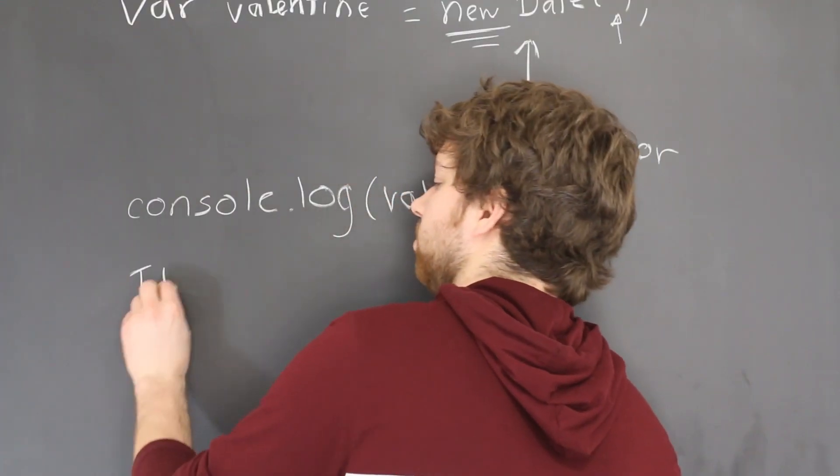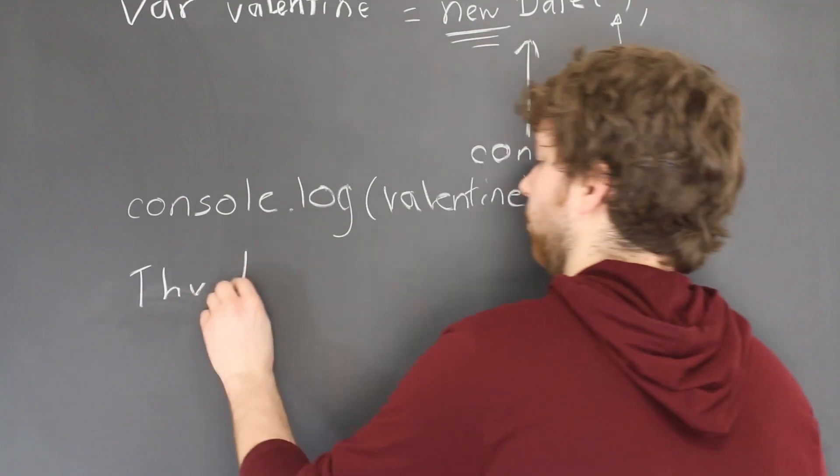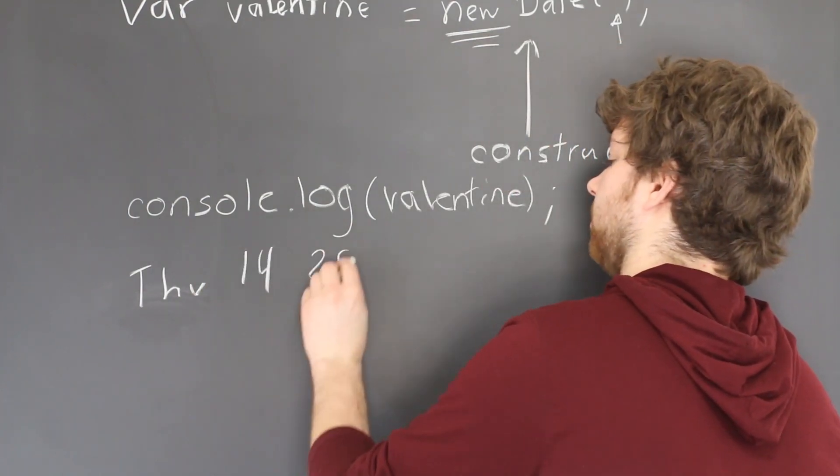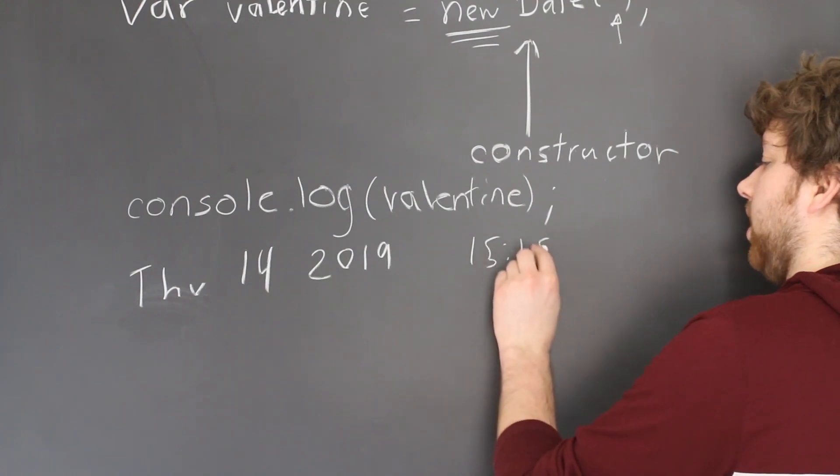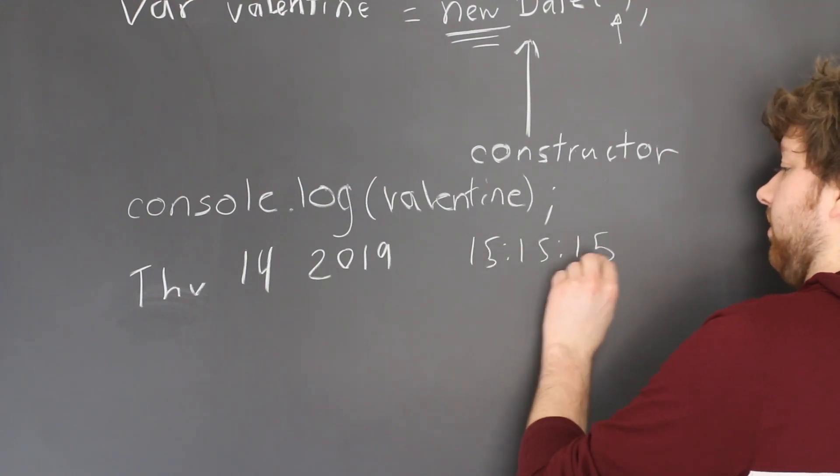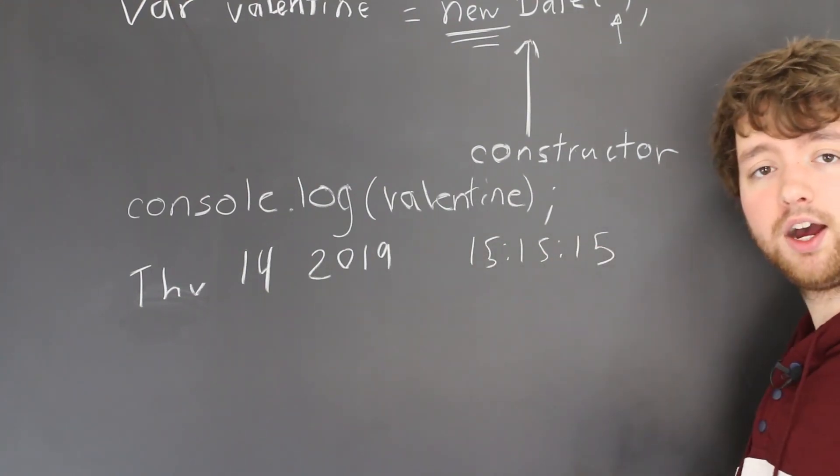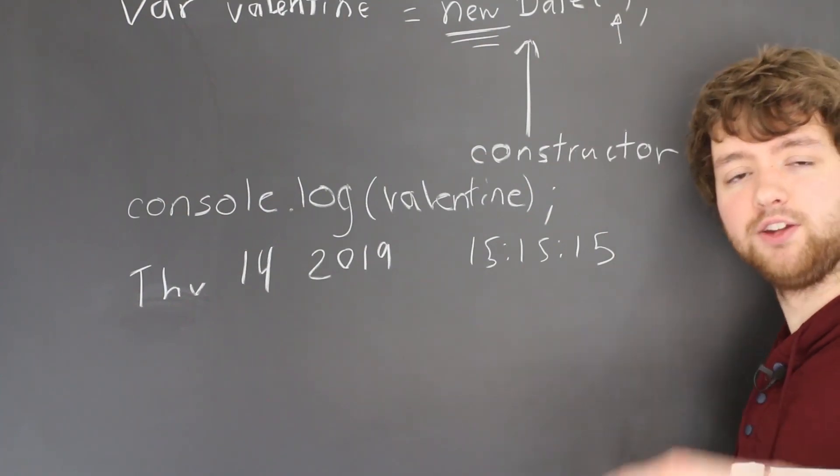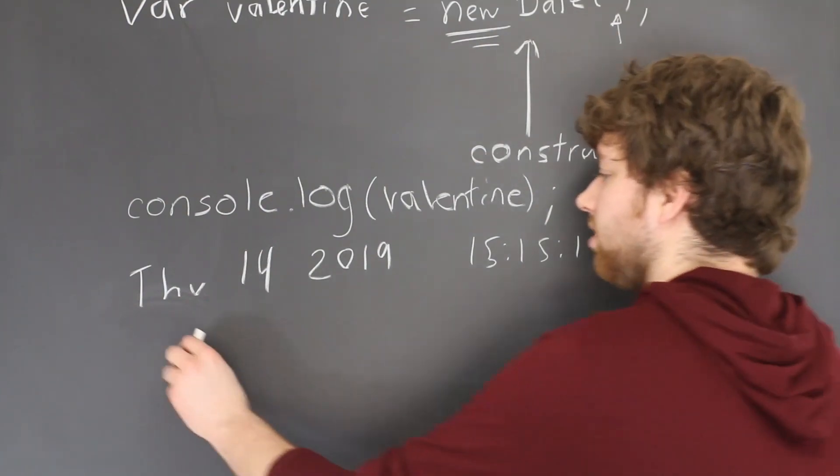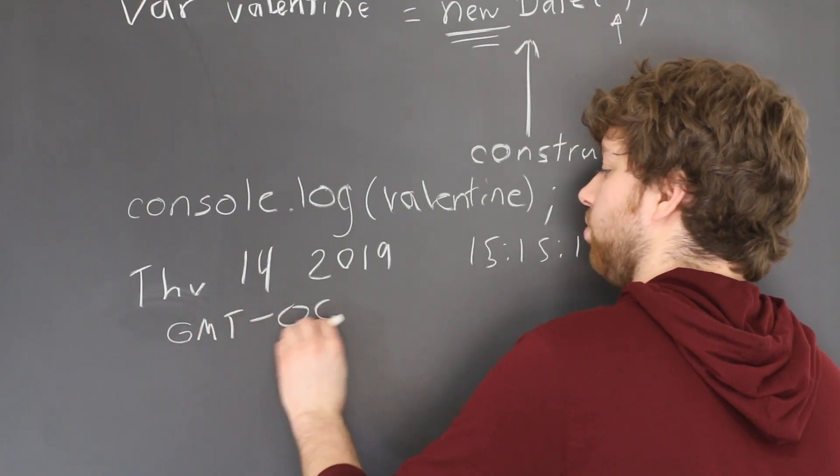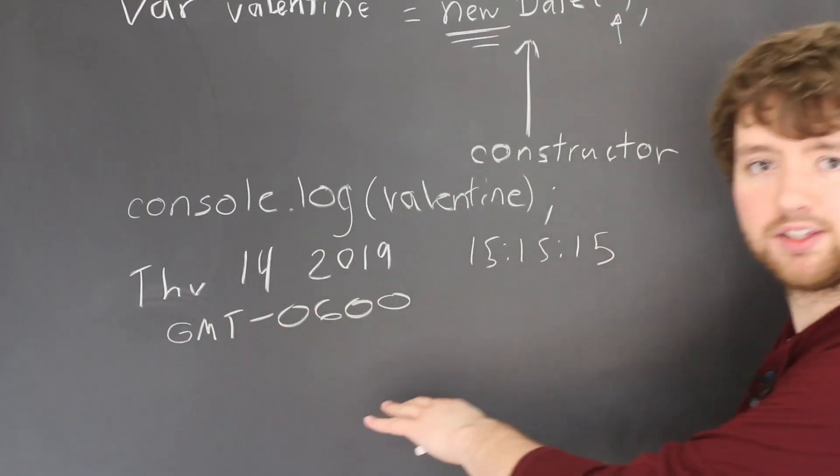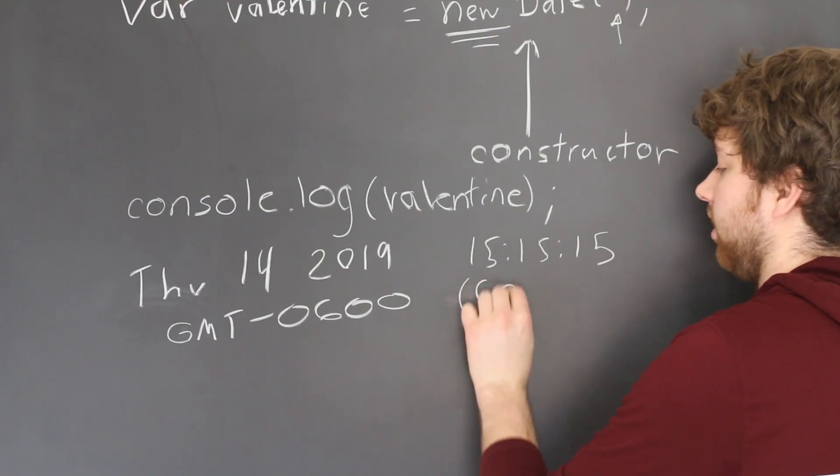So this will give you something along the lines of Thursday, the 14th, 2019. And then it'll give you the hour, the minutes, and the seconds. Then it's going to give you the time zone. And this is where it's going to change from person to person. So you might get something like GMT minus 0600, for example, which would be central time. So it would say something like central time.